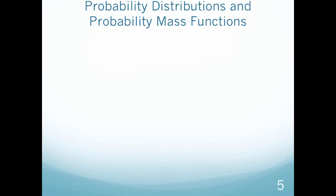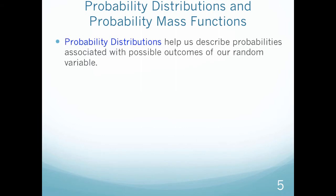Now that we're a little more familiar with a discrete random variable, let's talk about how it's described. We have something that's called a probability distribution, and a probability distribution helps us describe probabilities that are associated with possible outcomes of our variable.